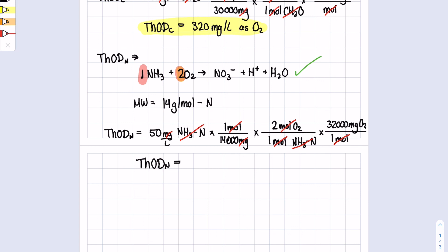ThODn, if we calculate that out here, we get 229 milligrams per liter as O2. That is our answer.